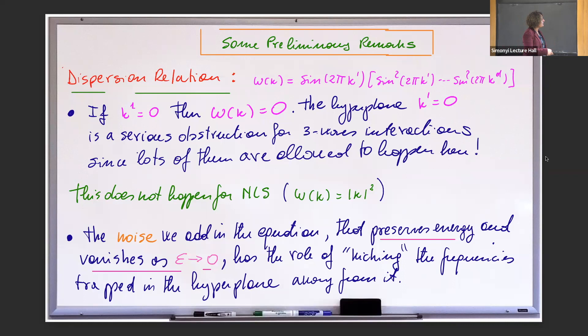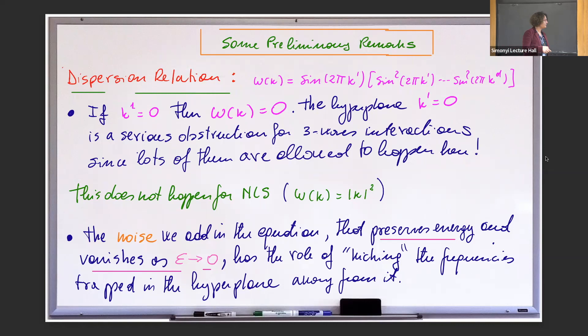This is different from when you take omega_k for the Schrödinger equation, which is just |k|^2, which is zero only at one point. So the noise we add in the equation is strong, as you pointed out, but at least it preserves the energy. As you will see in a moment, it really acts only in the angles. It does not act on the magnitude, and the wave kinetic equation is on the magnitude.